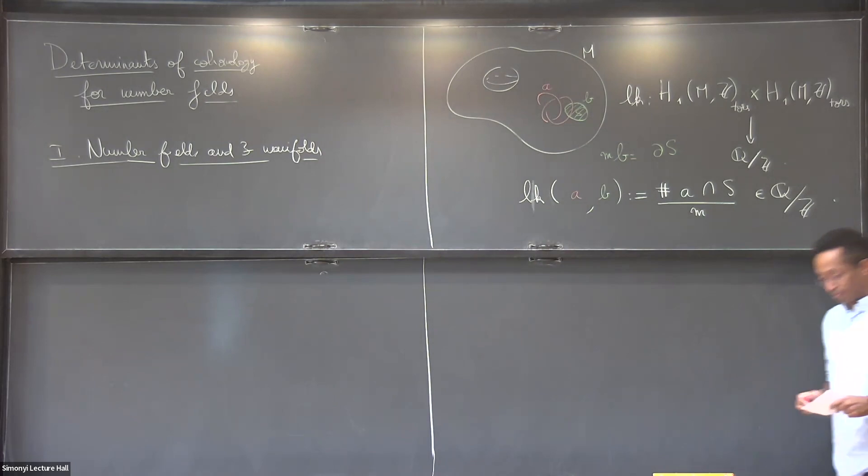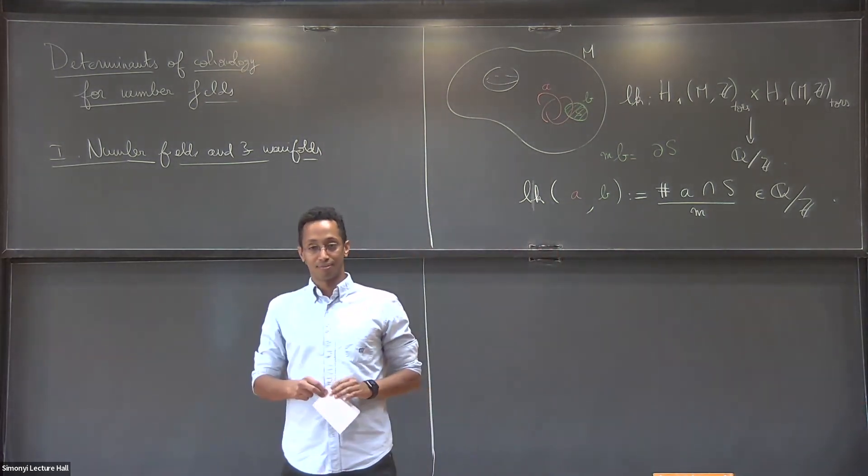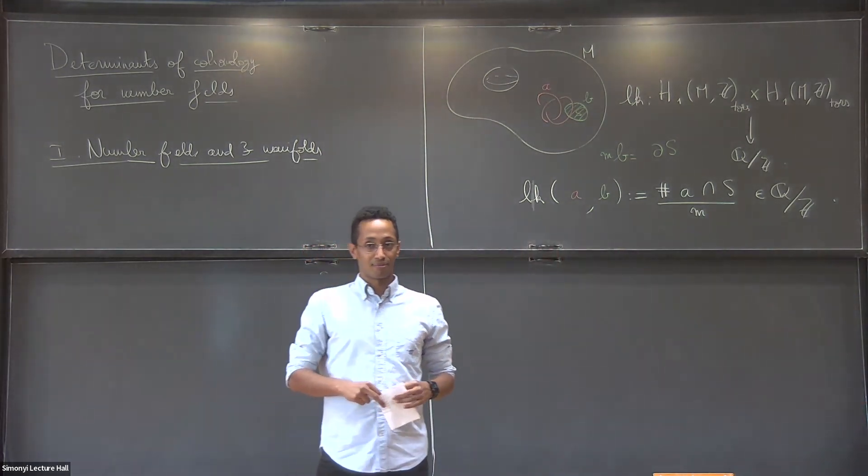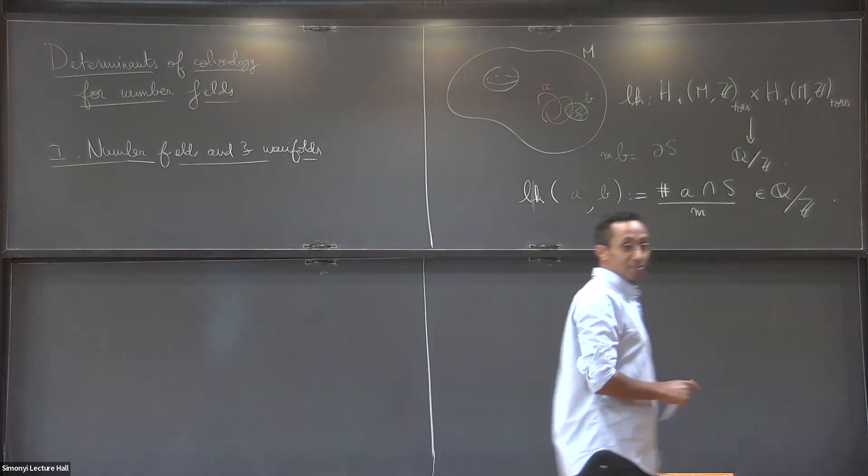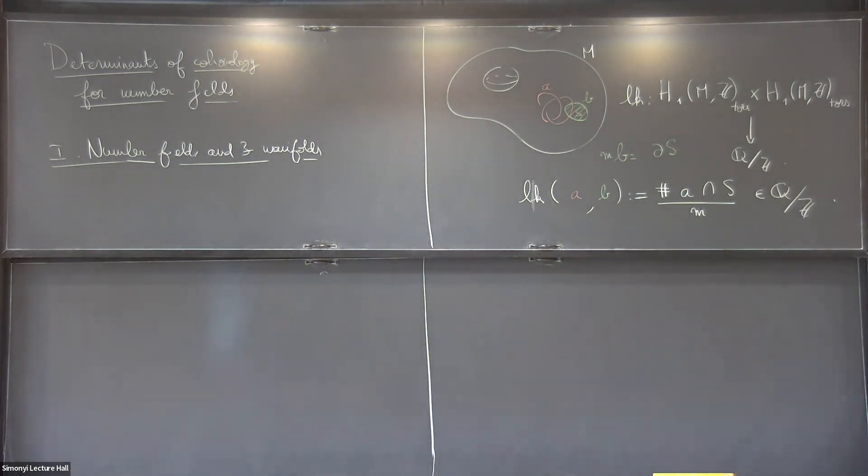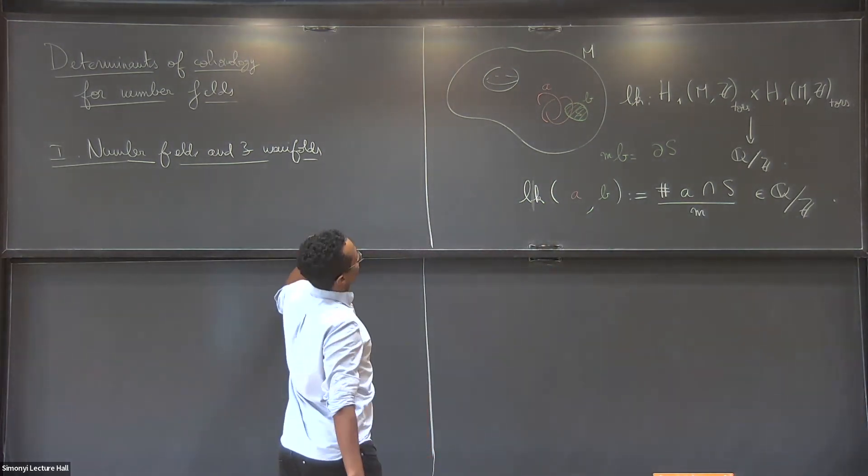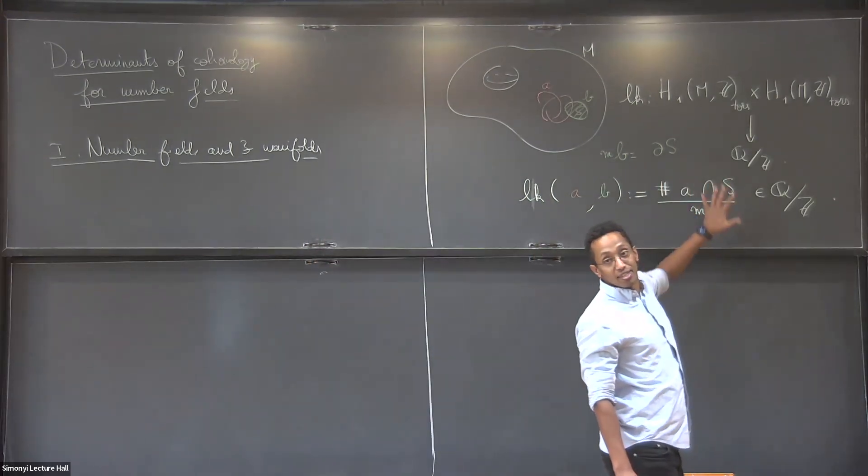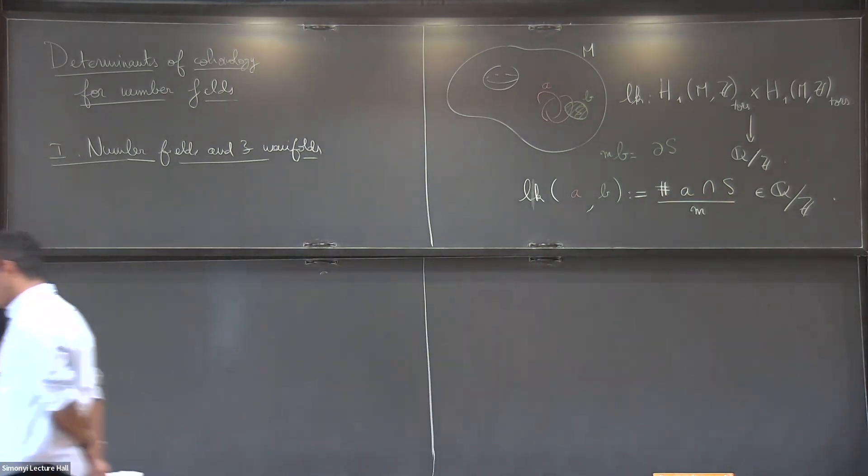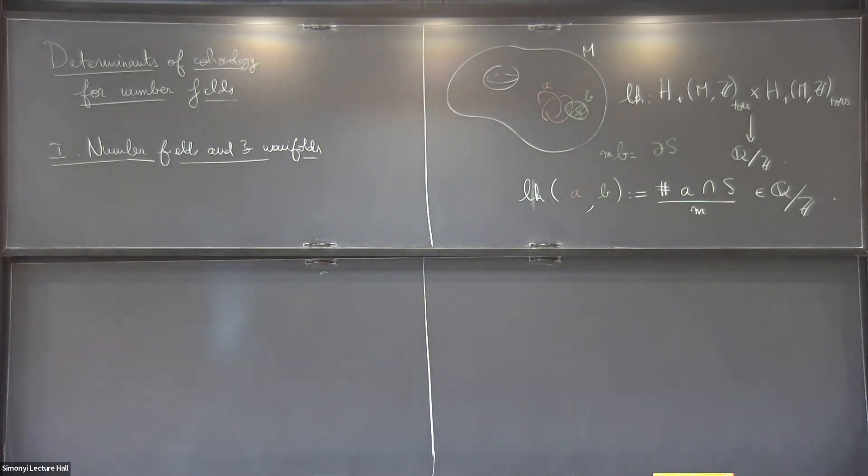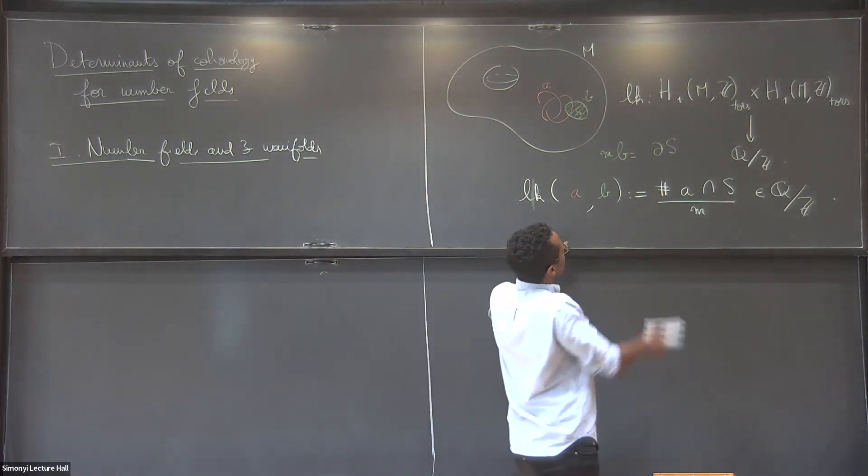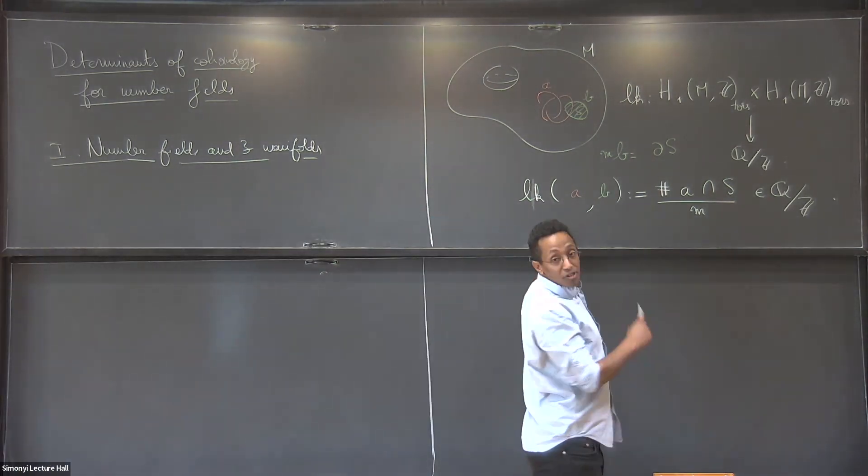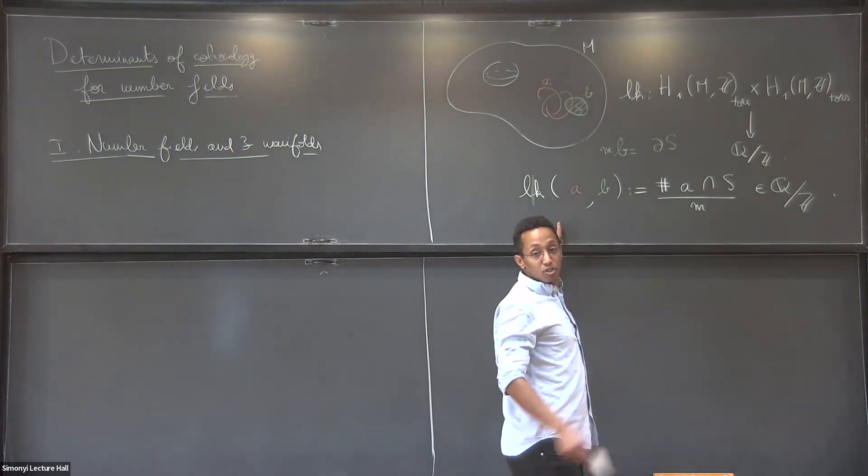There's one question. So you define something, it's well-defined for torsion and also non-torsion. Like you're not asking that A... Yeah, that's right. But is there a way to define it also if neither A or B are torsion? Yes, I mean, you can start making this definition and then you can check when it's well-defined. You'll get a number. And in some cases, it's well-defined. So you have some linking also on the free part, as long as certain conditions hold.